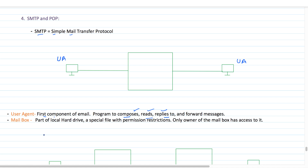Another component is called the Mailbox. A mailbox is basically a part of the local hard drive — a special file with permission restrictions. Only the owner of the mailbox has access to it. Suppose sender A and receiver B are both connected with the same mail server. There will be a dedicated space on the hard drive for each of them. The mailbox for A is accessible only by A, and the mailbox for B is accessible only by B.